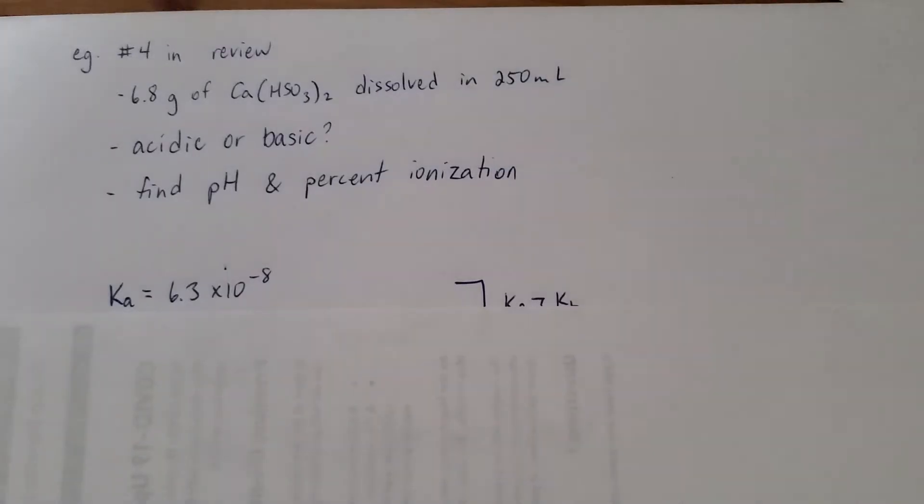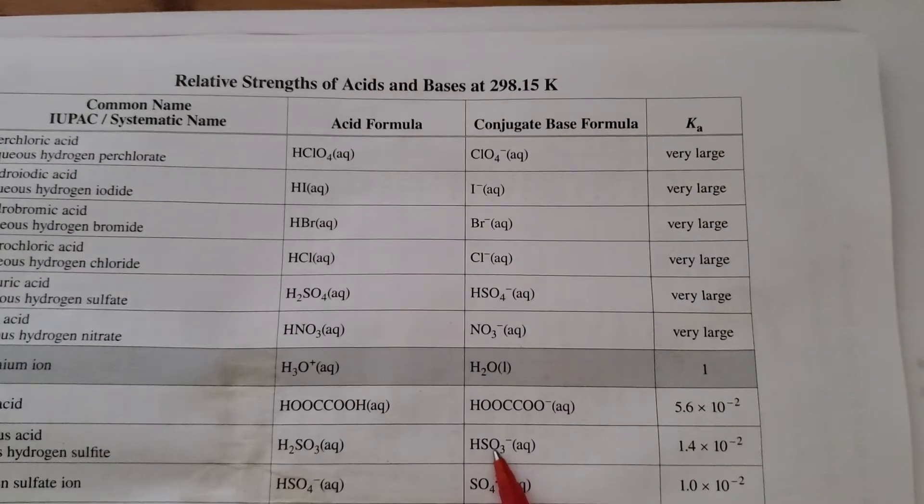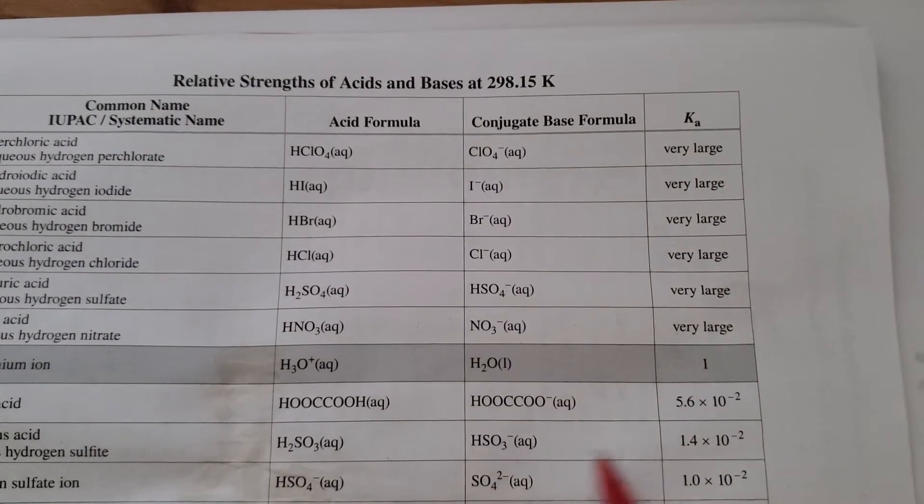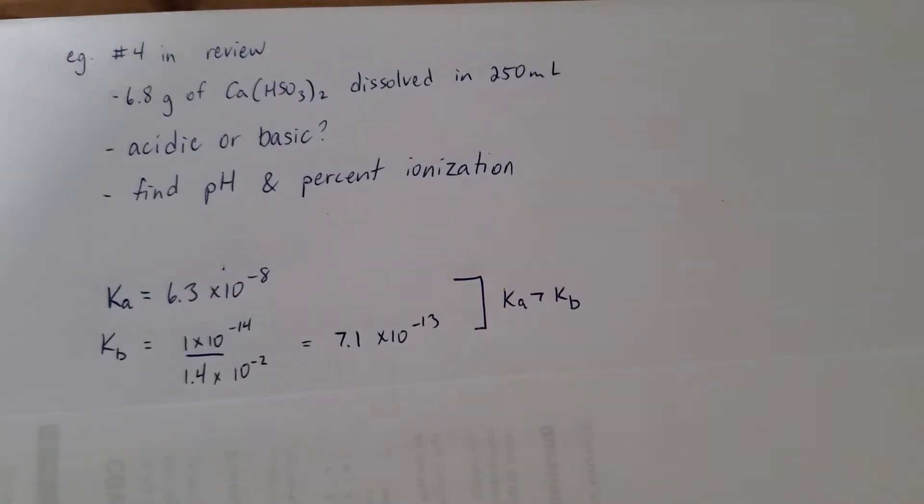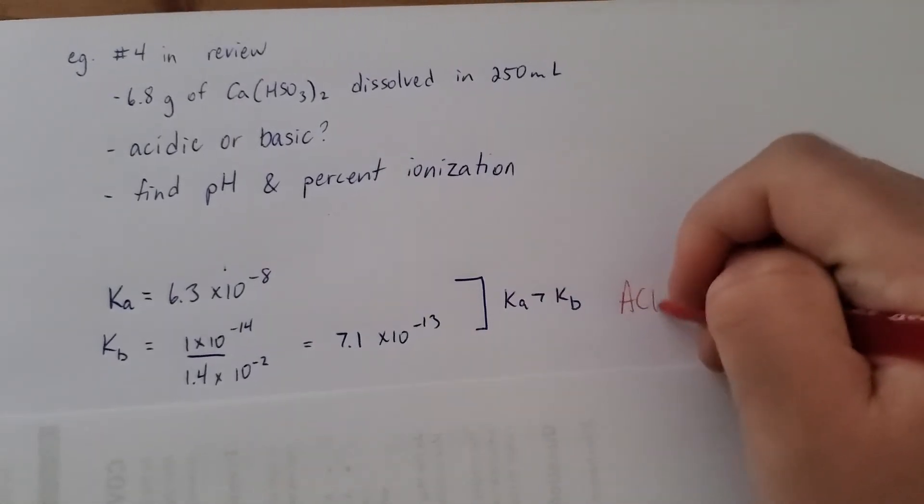To find Kb, find HSO3- in the base column, and then you do Kw divided by that, which I've done. Ka is greater than Kb, so the solution is acidic.